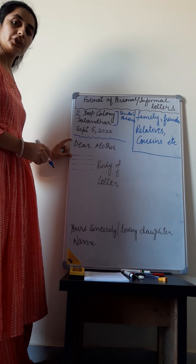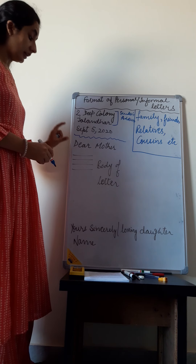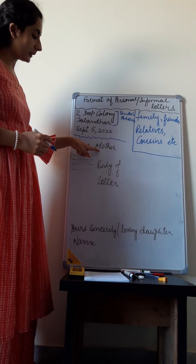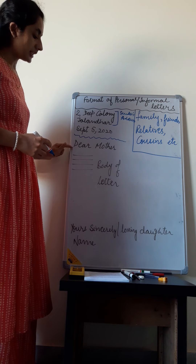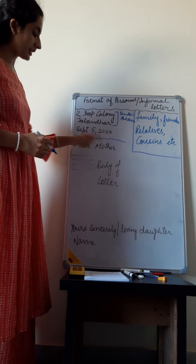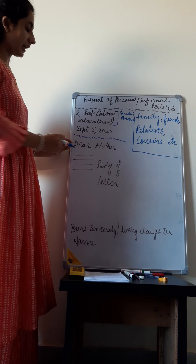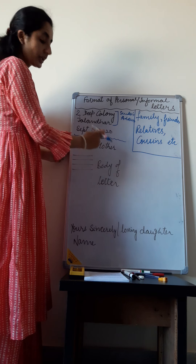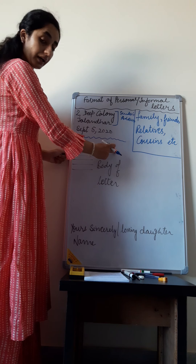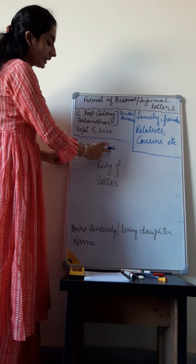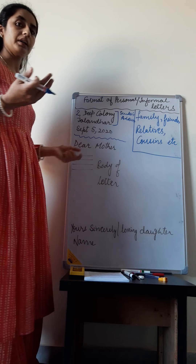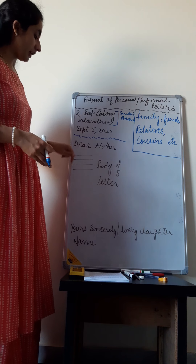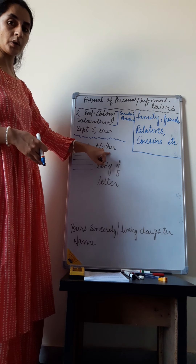Then we will mention the salutation, which can be: dear mother, dear father, dear brother, dear sister. You can also write the name of your friend — for example, dear Rohini or dear Rima. If your brother or sister is younger than you, you can write their name as well.